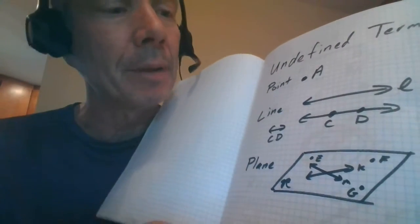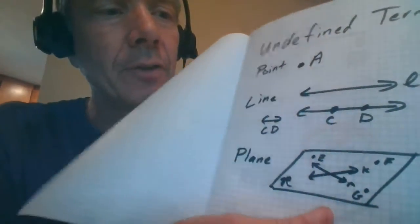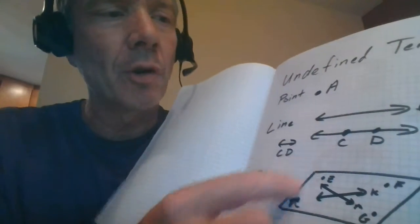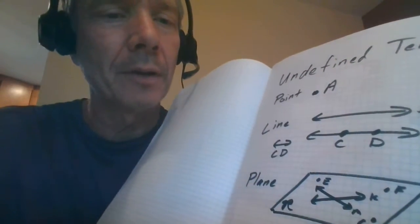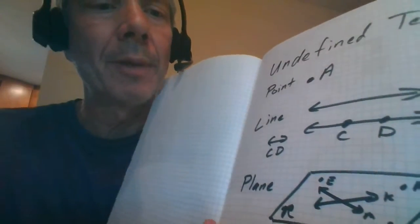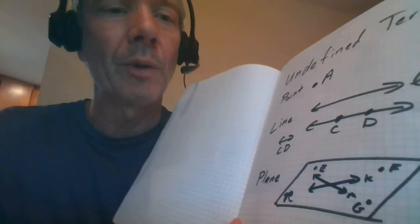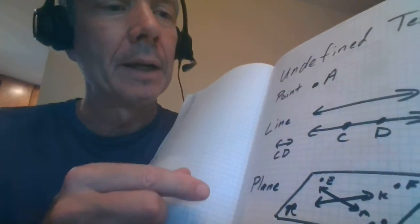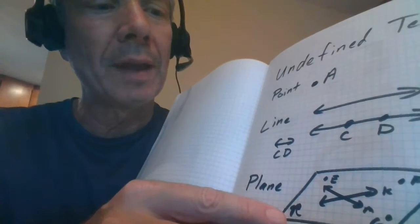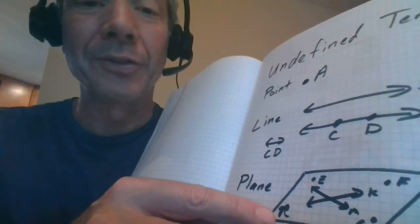And then finally one we haven't talked about yet is a plane. Now plane literally is almost like if you think of an infinitely thin sheet of paper. That's really a plane, but in most books they draw it like this to kind of give you a 3D feel, because really when we talk about plane, we need to start thinking about three dimensions instead of two dimensions, because we want to talk about what's not on the plane.